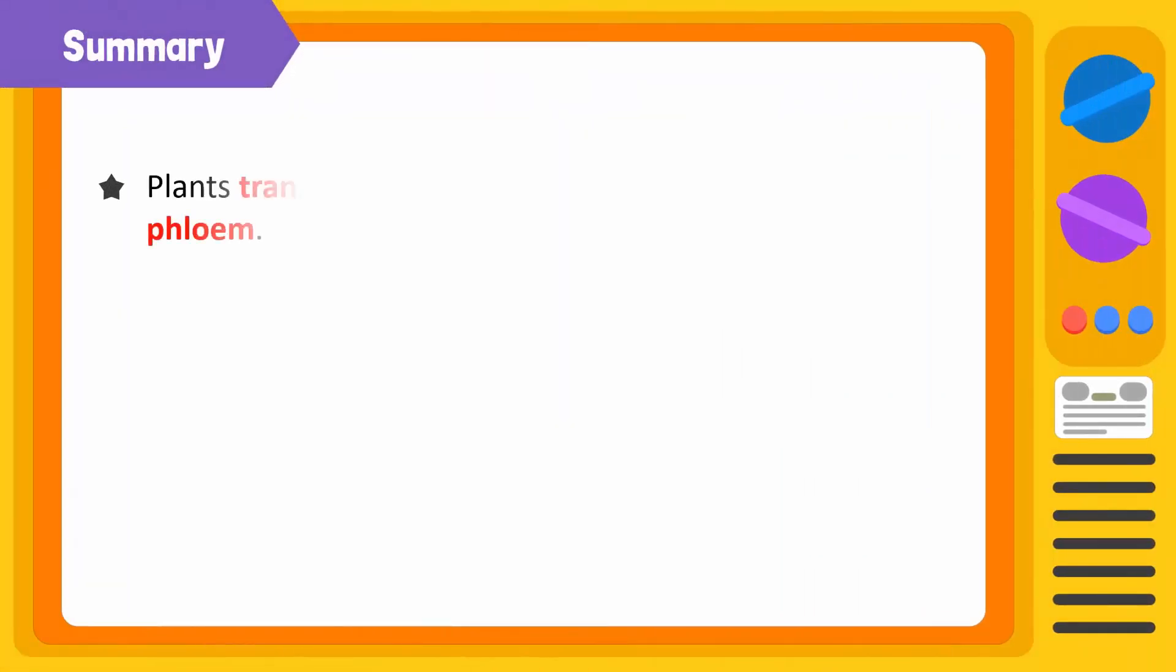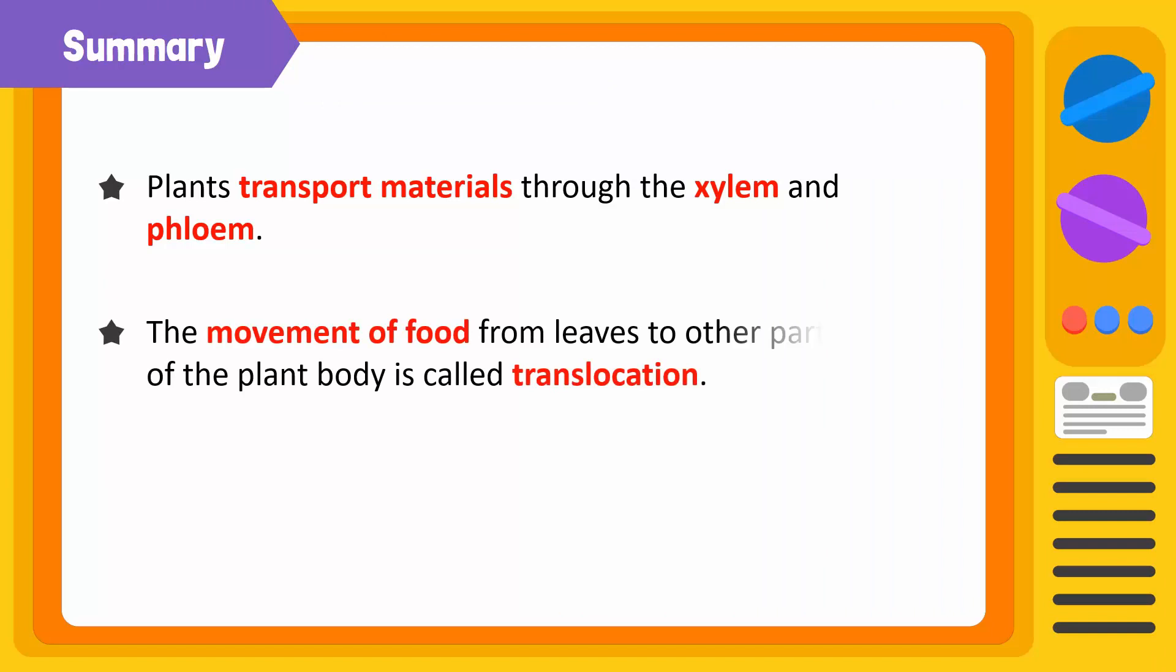To summarize, plants transport materials through the xylem and phloem. The movement of food from leaves to other parts of the plant is called translocation. The movement of gases in plants occurs through stomata by diffusion.